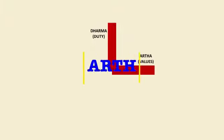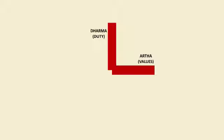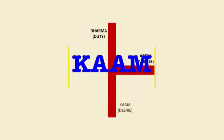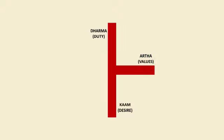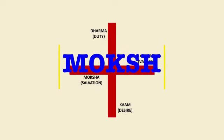The second arm is from the right to center, and denotes Arth, or values or earnings. The third arm is bottom to center, and denotes Kaam, or desires. And the fourth arm is left to center, and it denotes Moksha, or liberation due to fulfillment.